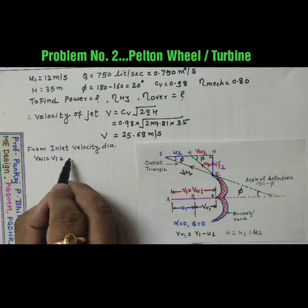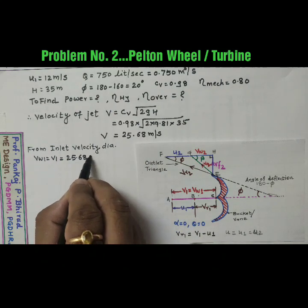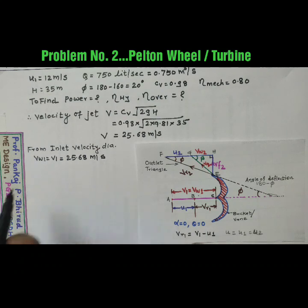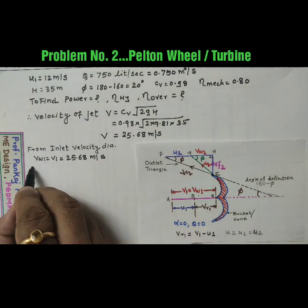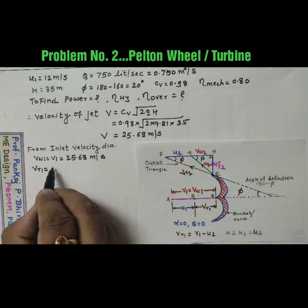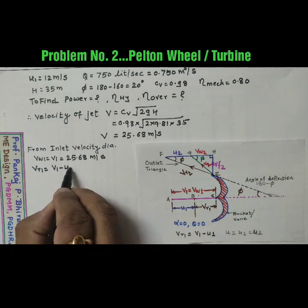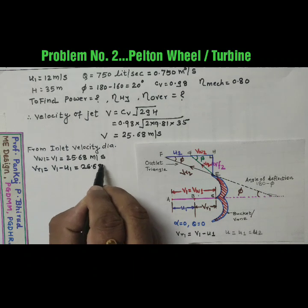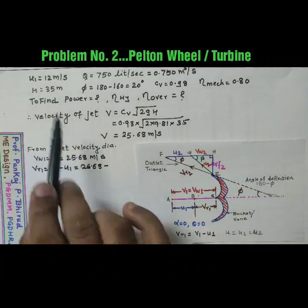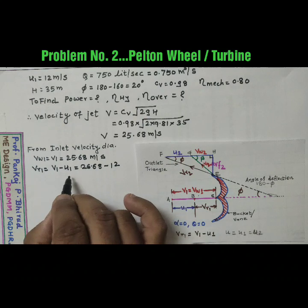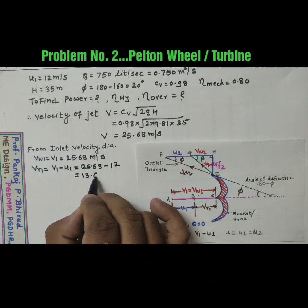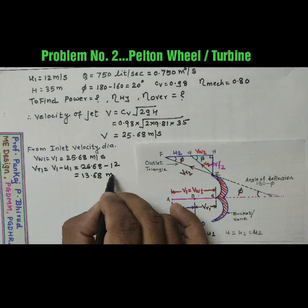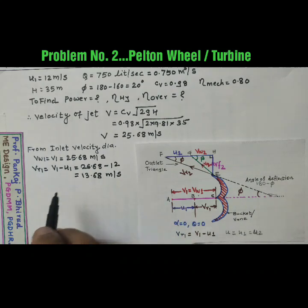Also Vr1 is equal to V1 minus U1. So Vr1 is equal to V1 minus U1. So that is V1 is 25.68 minus U1 is 12. So Vr1 is 13.68 meter per second.